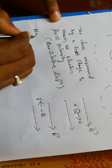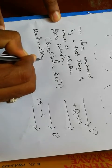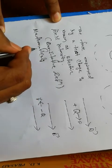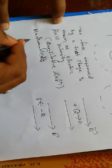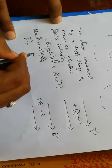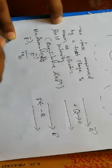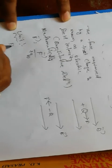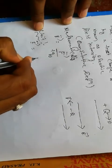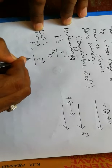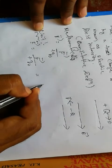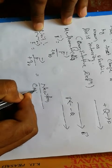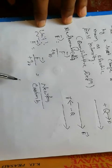Mathematically, E vector equals force per unit test charge. That is, electric field vector equals force divided by test charge. The unit of electric field is Newton per Coulomb (N/C).